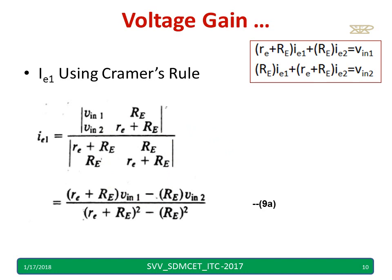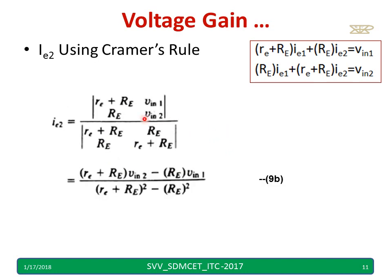Similarly, I can write for IE2 using Cramer's rule. I keep RE plus RE, RE, VIN1, VIN2 in the numerator and denominator. After multiplying these pairs and subtracting cross terms, I obtain the expression for IE2. You can pause and try to understand.